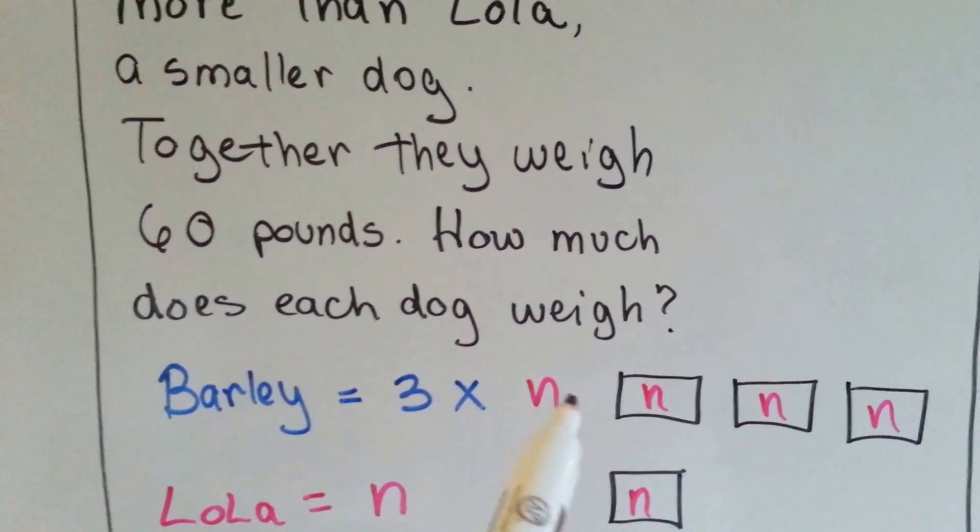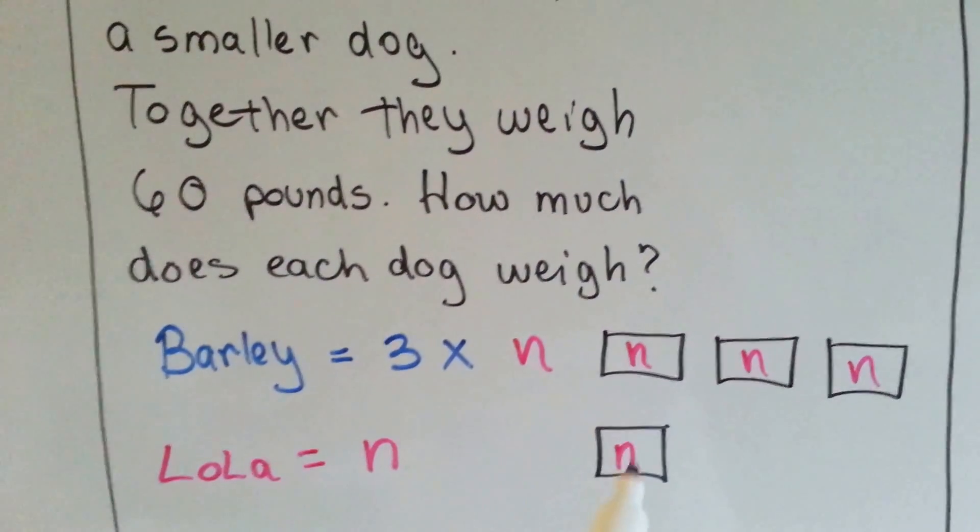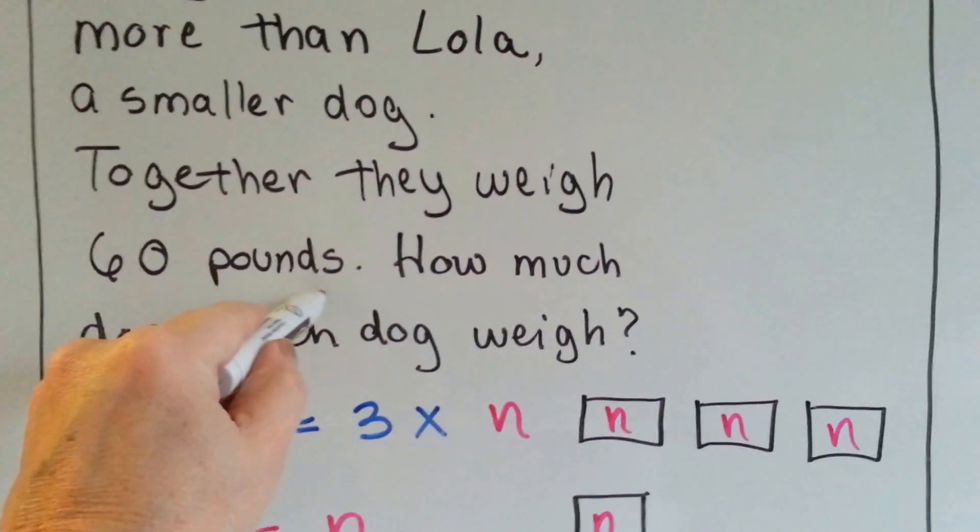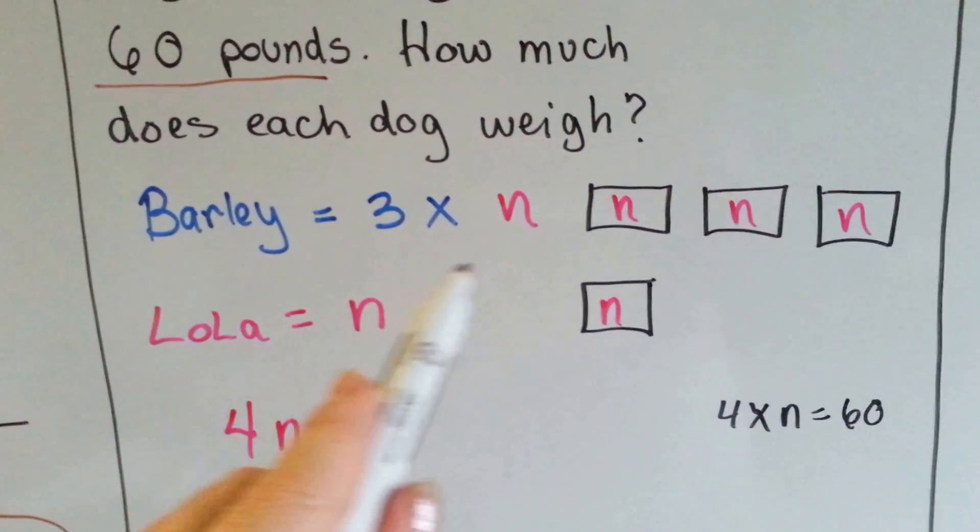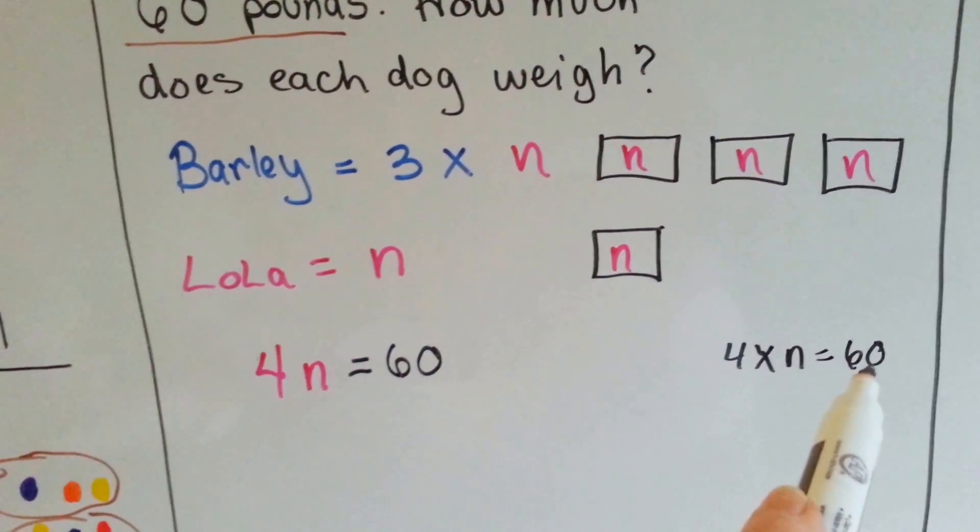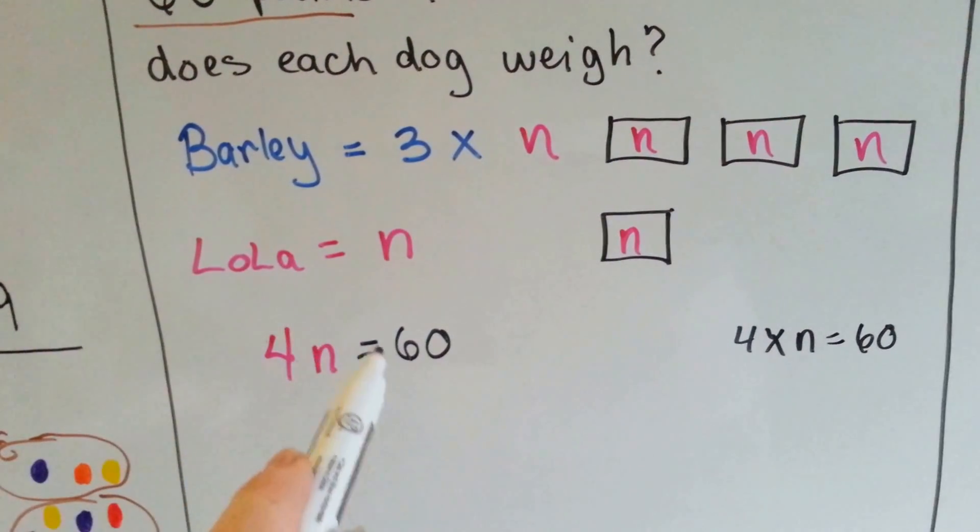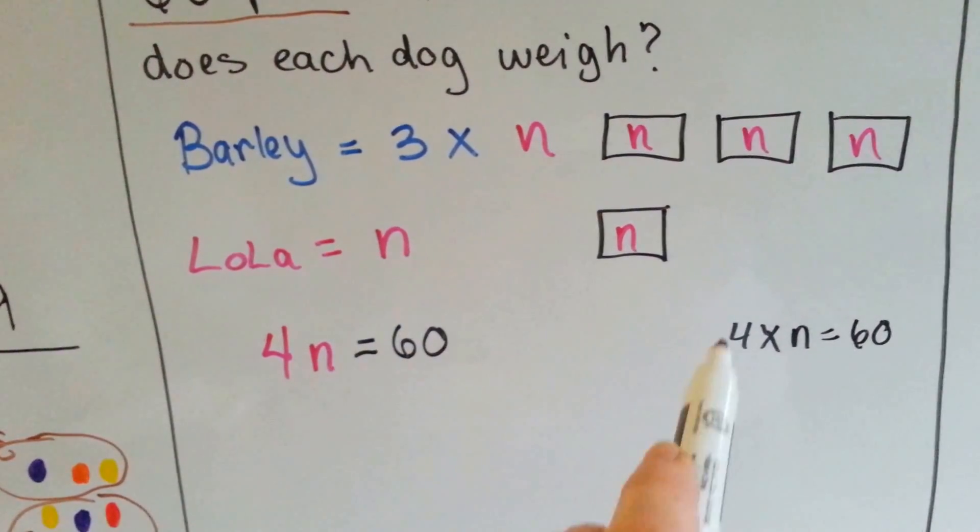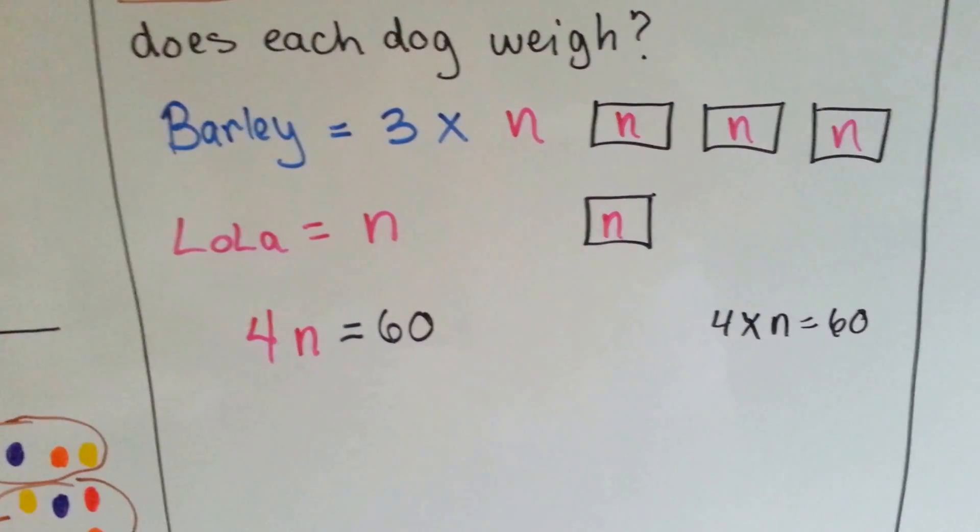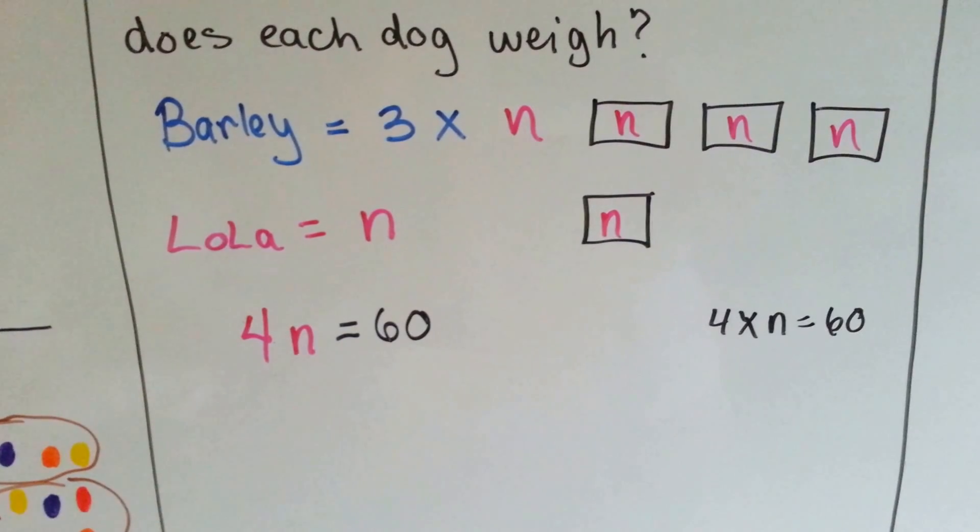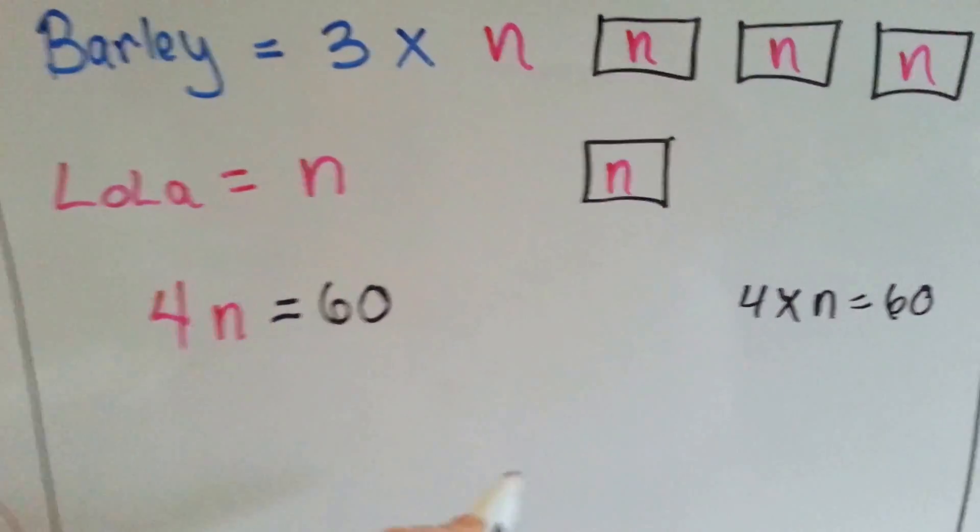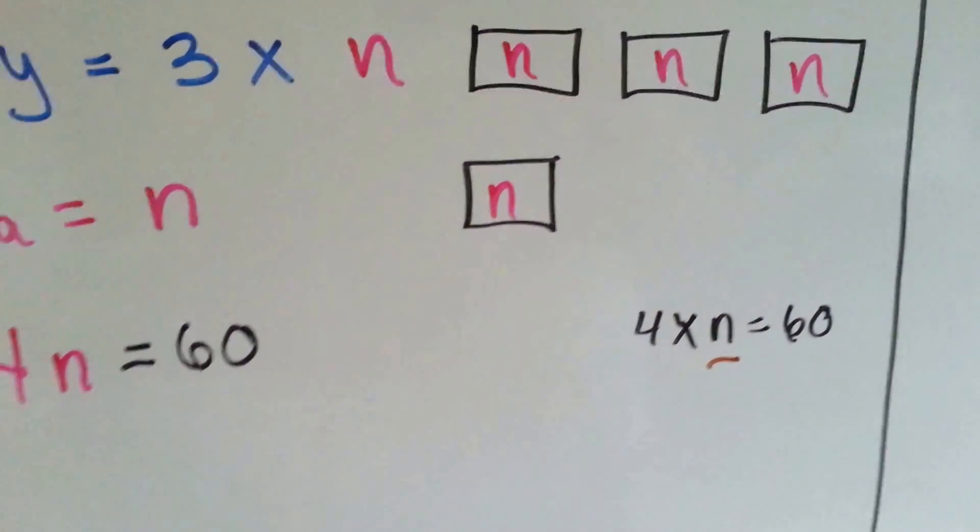So Barley has got three n's, and Lola's got one n. And together it's 60. So now we've got one, two, three, four n's equals 60. Four n's are equal to 60. Four times n equals 60. What is 60 broken up into four parts? Can you figure this out? Four times what equals 60?